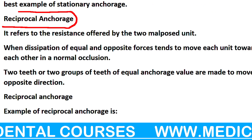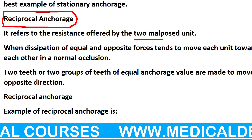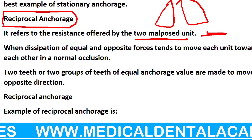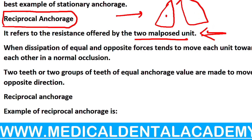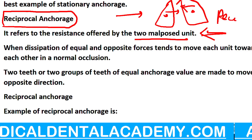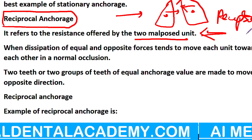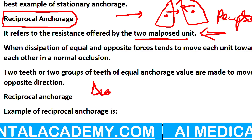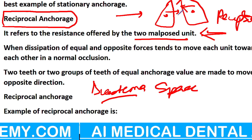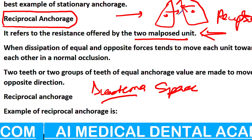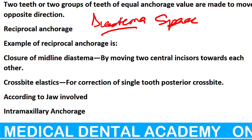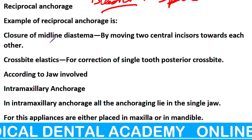Reciprocal anchorage — मतलब क्या है? दो teeth एक दूसरे की अलग दिशा में हैं। एक को इस तरफ move करना है, एक को उस तरफ — दोनों को यहाँ चीज़ लगाकर दोनों को खींचना है — इसको बोलते हैं Reciprocal anchorage. यह कब काम आएगा? जब diastema होगा — diastema मतलब space between teeth — तो एक दूसरे को खींचकर closure of midline diastema हम कर सकते हैं।